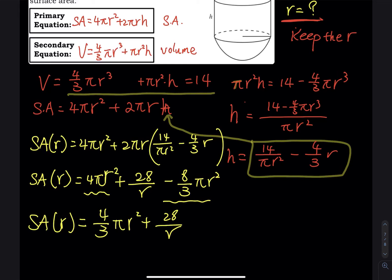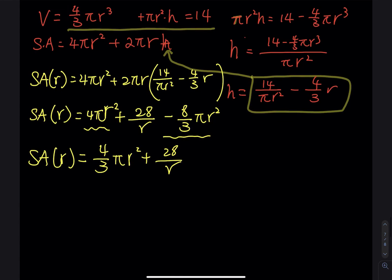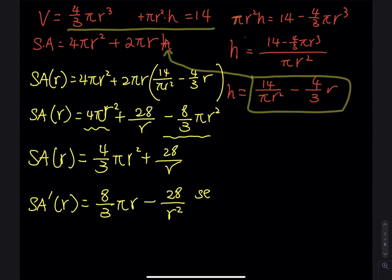Now take the derivative to find the critical number. SA′(r) = (8/3)π r − 28/r². Set SA′(r) = 0 and move 28/r² to the other side: (8/3)π r = 28/r². Cross-multiplying gives 8π r³ = 84, so r³ = 21/(2π).